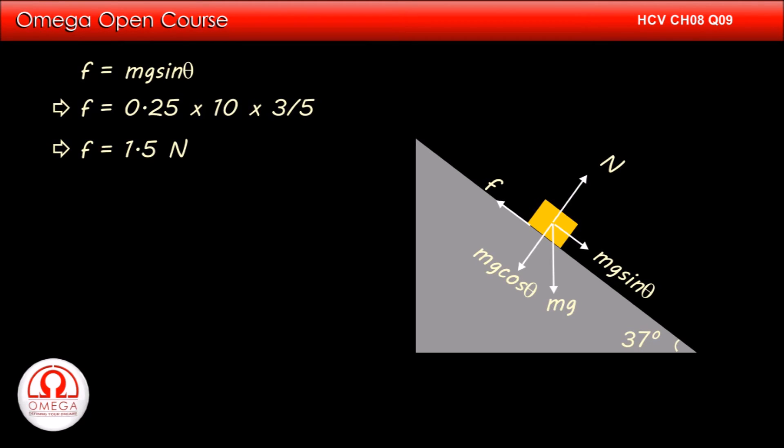If force and displacement are along same line, then work is force into displacement. Therefore, the work against friction is f into d, or 1.5 into 1, that is 1.5 joules. This is our answer.